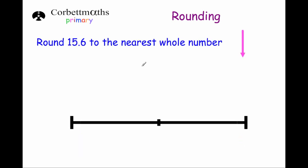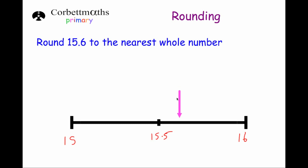Our next question asks us to round 15.6 to the nearest whole number. The nearest whole number below 15.6 is 15 and above is 16, and midway between those two numbers is 15.5. If we put 15.6 on the number line it would be around here because it's bigger than 15.5. So 15.6 is closer to 16 than to 15, making our answer 16.